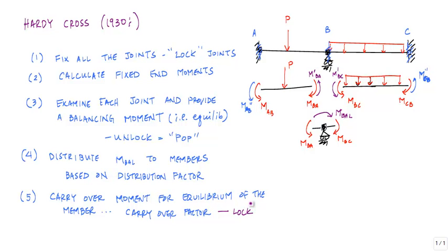After you carry over, apply a balancing moment, and then you'll have the unlock — or the pop — when you distribute. So to recap: first, fix all the joints, lock it, and calculate the fixed end moments — you only do that once. Then pop all the joints, figure out the balancing moment distributed to all the members, apply the carryover to the other side, then lock again. Then go back and figure out the balancing moment again — pop. Lock and pop, lock and pop. You can call it the Hardy Cross method, the moment distribution method — call it what you want. Just make it work.